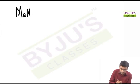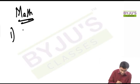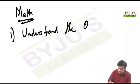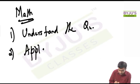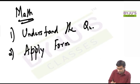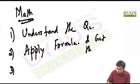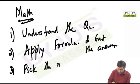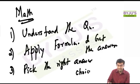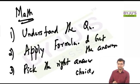What do we typically do in math questions? The way we solve a math question is: first, we understand the question. After we understand the question, the next step is we apply a set of formulas, and then we get the answer and pick the right answer choice. This is the methodology we follow — understand the question, apply the formula, get the answer, and pick the right answer choice.